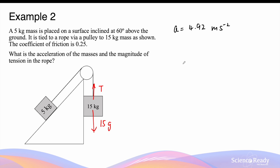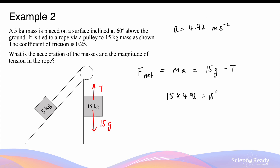Now that we've found the acceleration, we can use that to find the tension, like we did in the previous example. We can do this by considering the net force acting on the 15kg mass only. This is given by its mass times acceleration, and it's also equal to the sum of the weight force and the tension force. The mass is 15kg and the acceleration is 4.92 m/s², and this equals 15 times 9.8 minus tension. So tension equals 15 times 9.8 minus 15 times 4.92, which gives a value of 73.2 newtons.